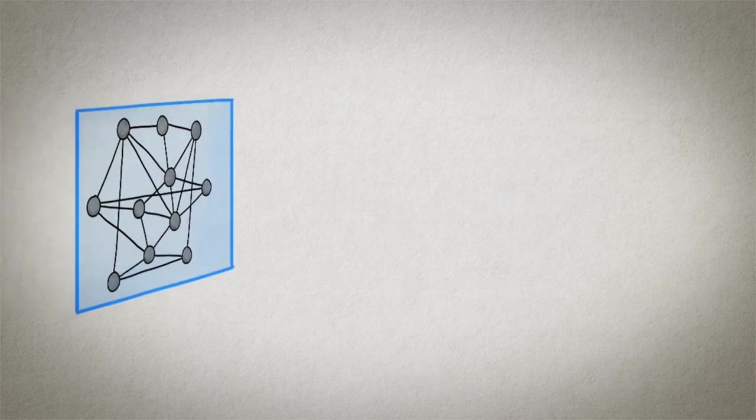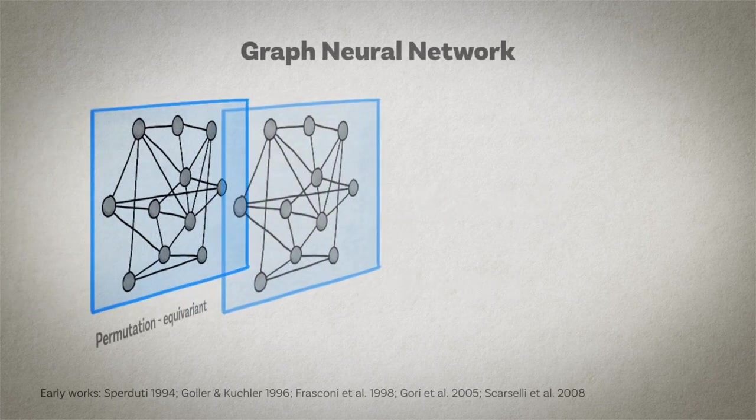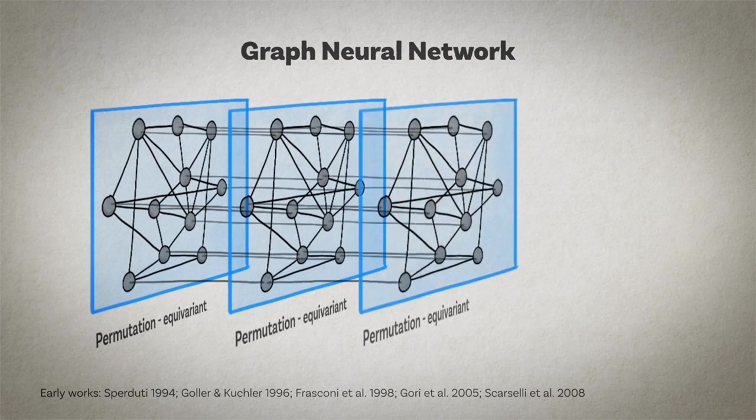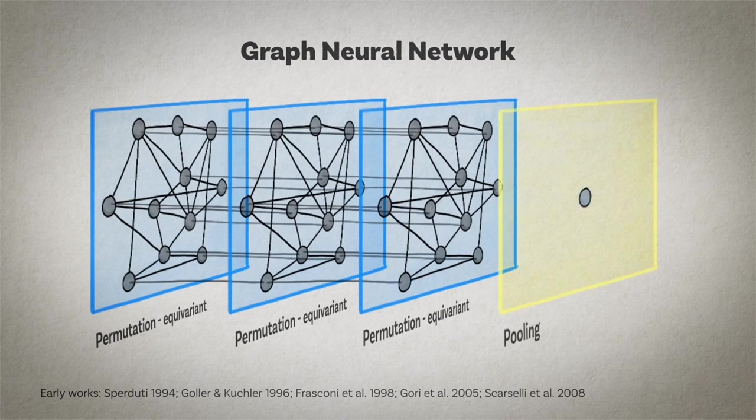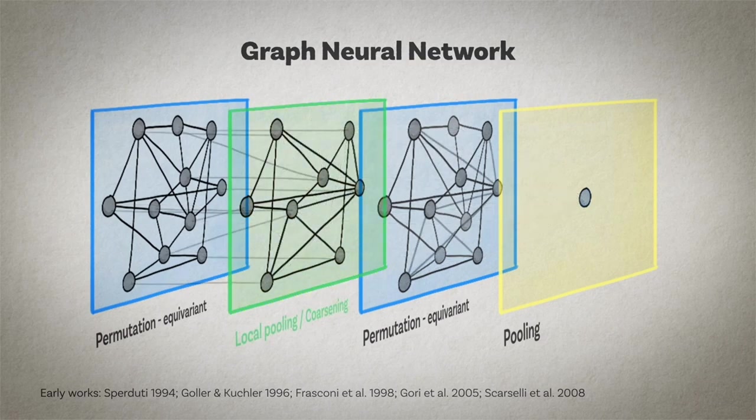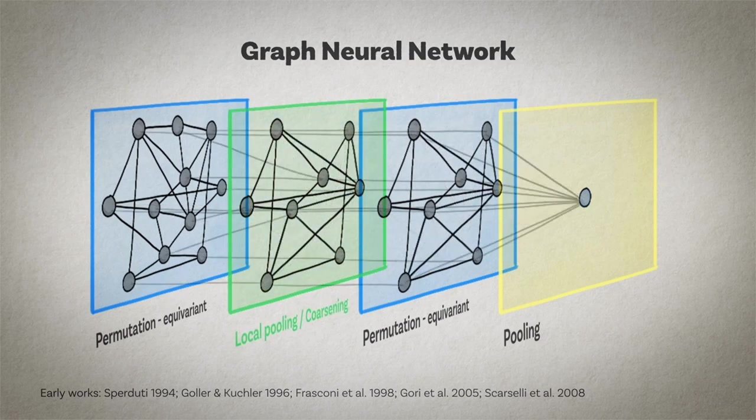If you look at a typical graph neural network architecture you will immediately recognize an instance of our geometric deep learning blueprint with the permutation group as the geometric prior. We have a sequence of permutation equivariant layers often referred to as propagation or diffusion layers in the literature and an optional global pooling layer to produce a single graph wise output. Some architectures also include local pooling layers obtained using some form of graph coarsening that can also be learnable.